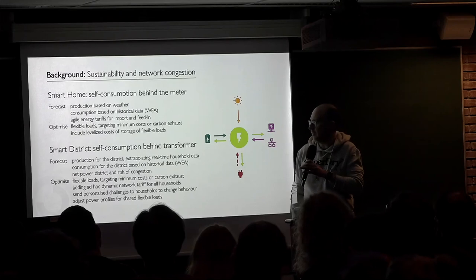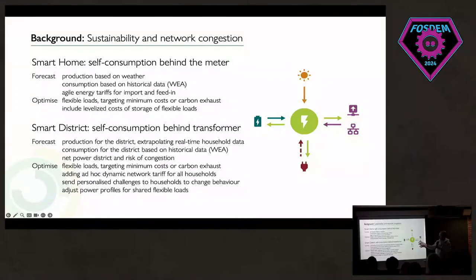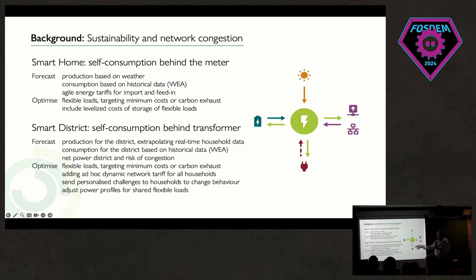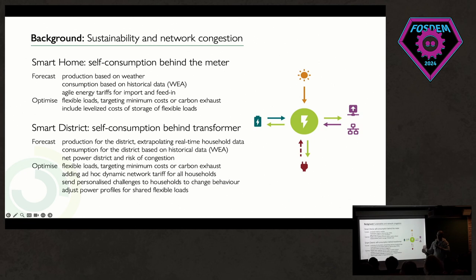What we are trying to optimize is minimizing the cost or carbon exhaust based on all this data. The system will control what we call flexible loads. Depending on the data, it can decide when to charge or discharge the battery, when to charge or discharge electric vehicles, or it can control heavy loads like heat pumps — where you have some freedom on when to power them up or adjust the temperature set point. This can be automatic, but it could also simply be manual by pushing information to end-users through the UI.